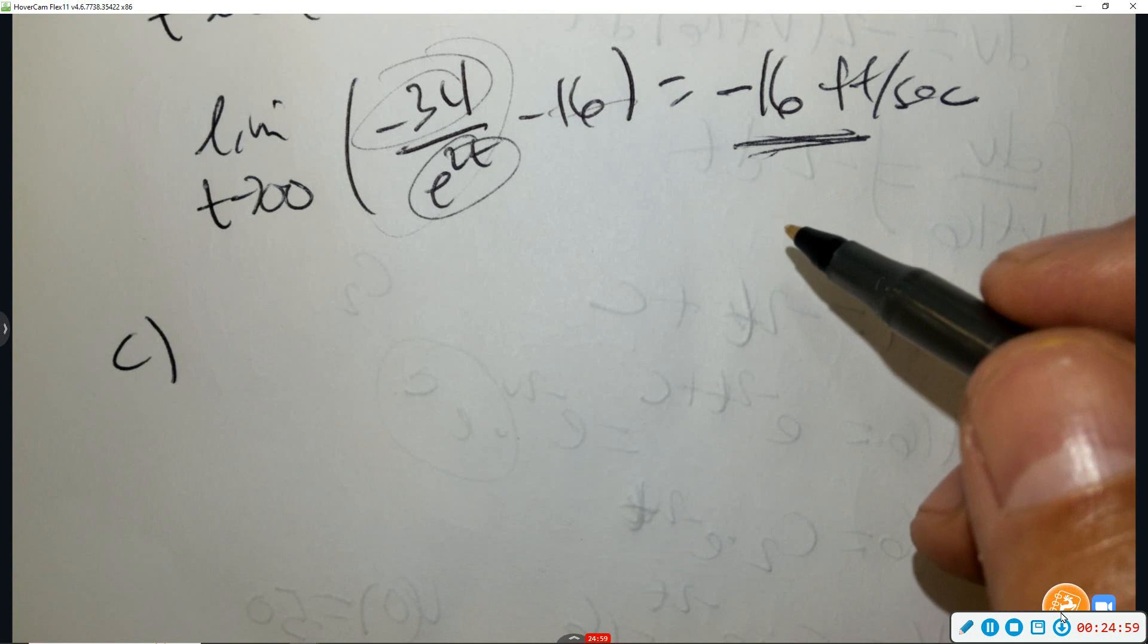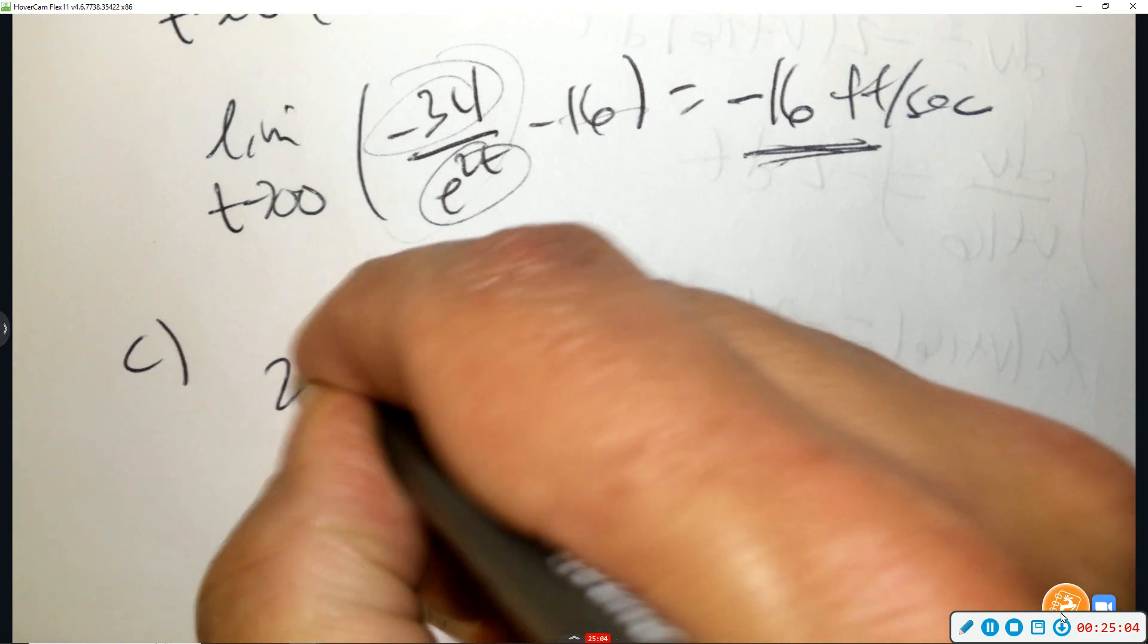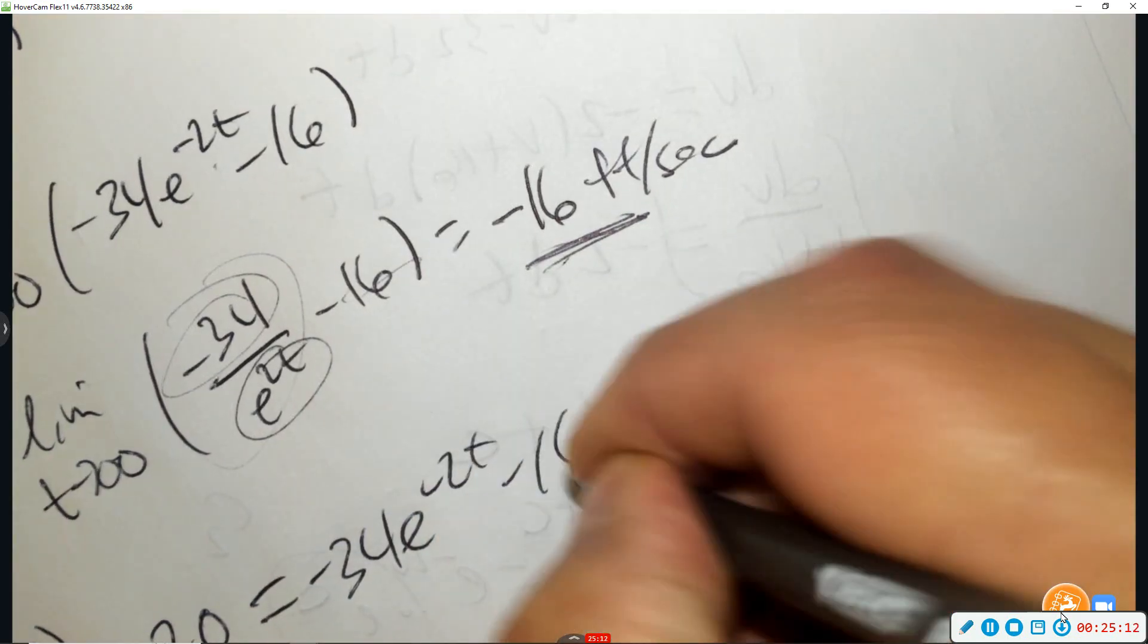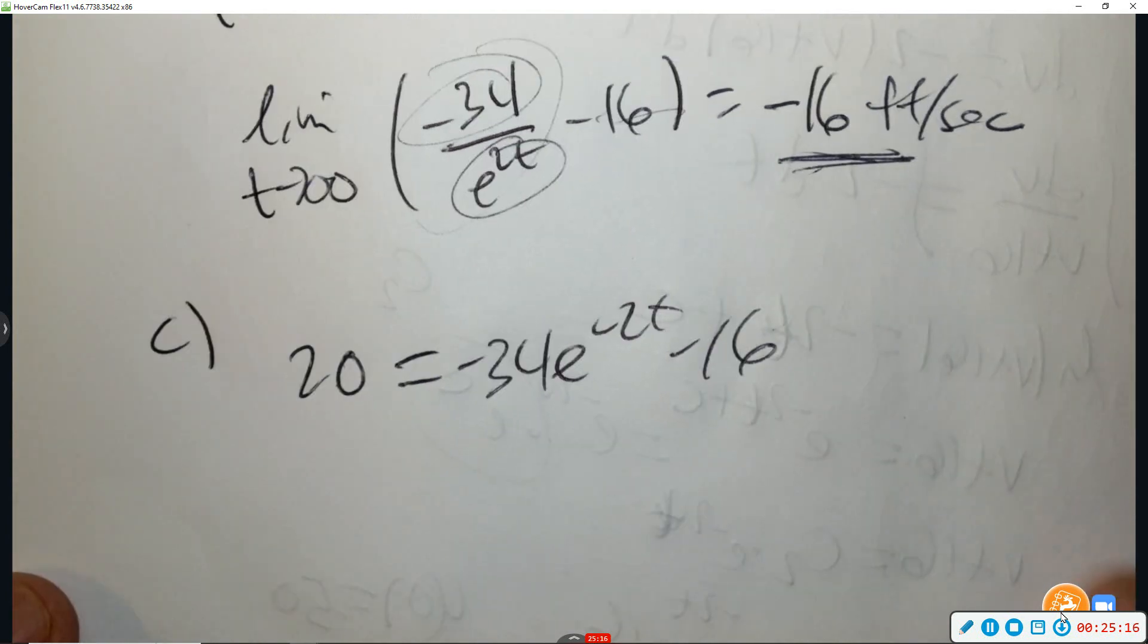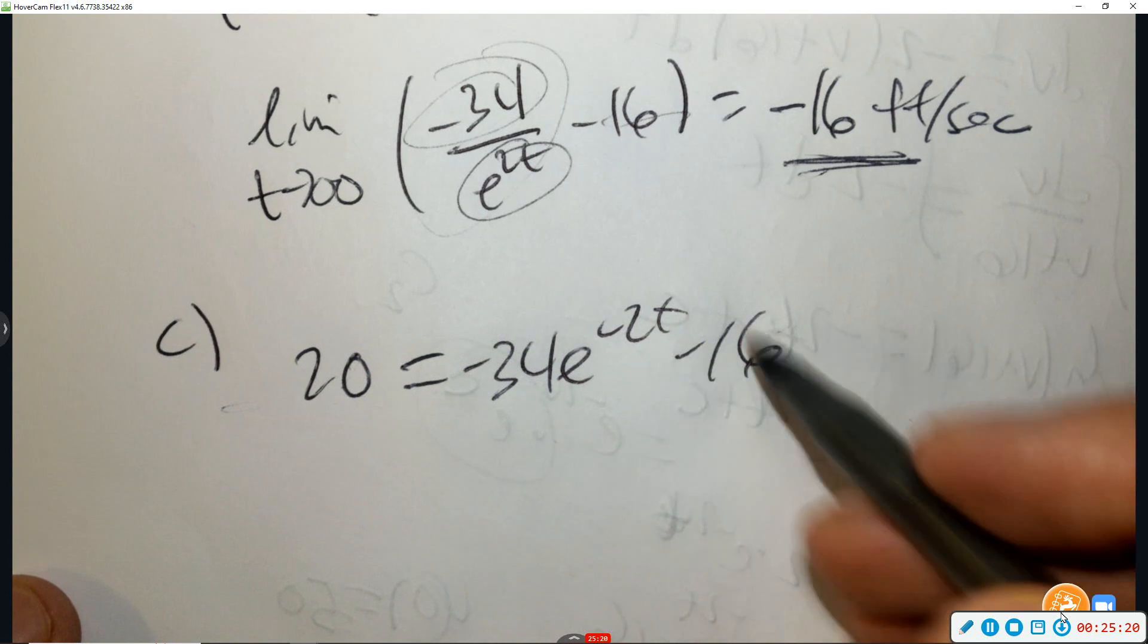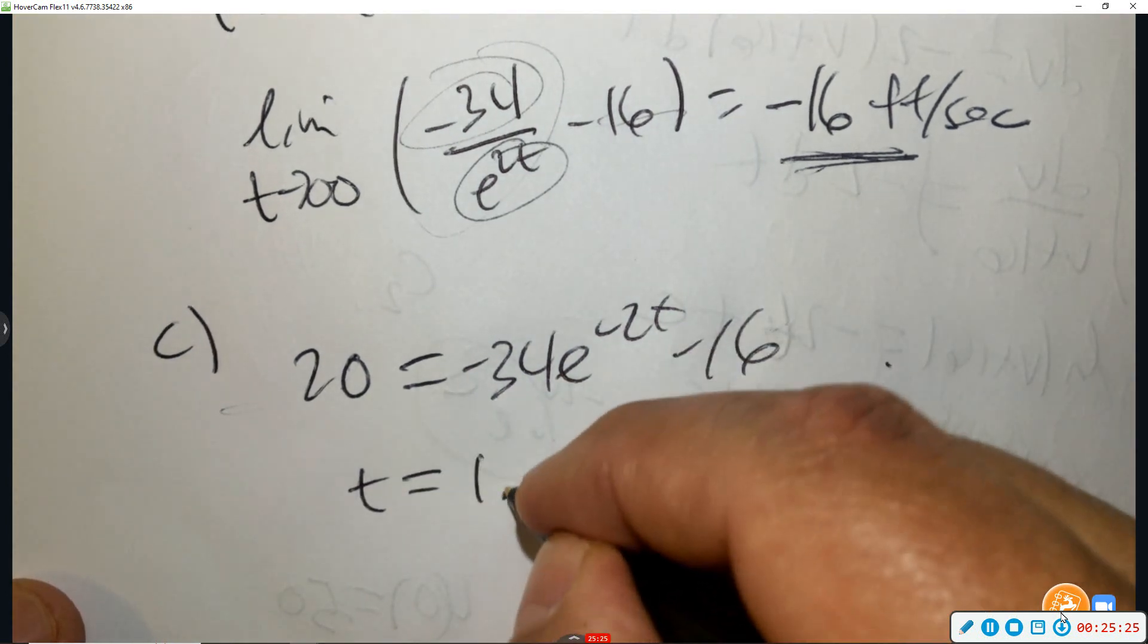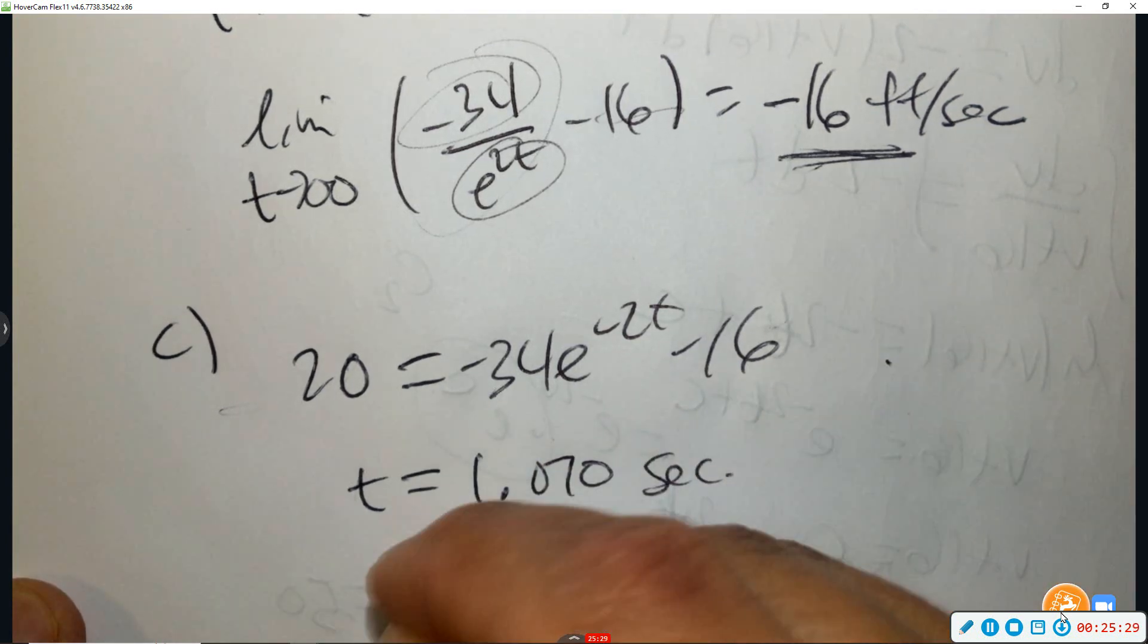It is safe to land when her speed is 20 feet per second. At what time does she reach that speed? So 20 is equal to negative 34, e to the negative 2T minus 16. And then use your calculator, you know, algebra, solve, type it in, comma T, and you would get the answer. You should press pause and try it. It is 1.07 seconds. And you did it.